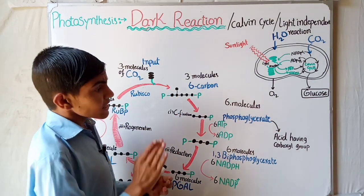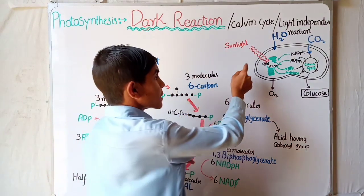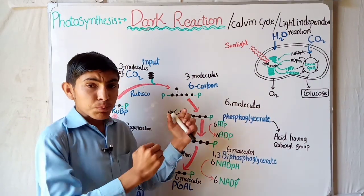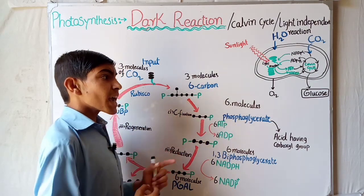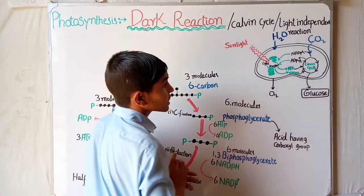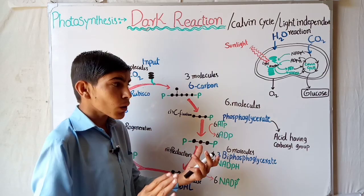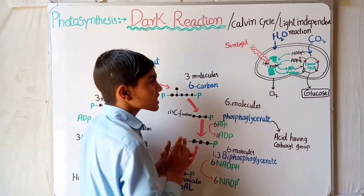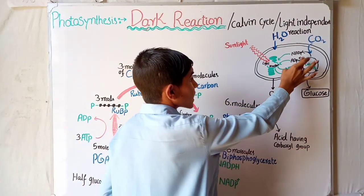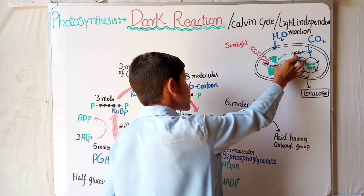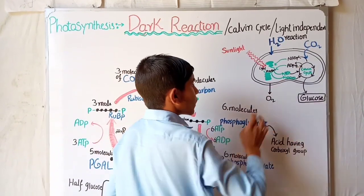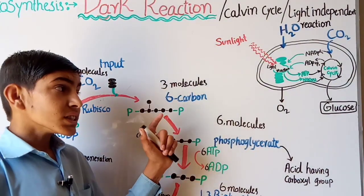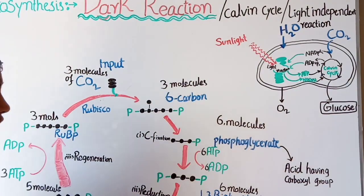Inside the chloroplast, two reactions take place. Firstly, the products of the light reaction — ATP and NADPH — are released into the stroma. ATP serves as the energy currency while NADPH is the reducing power. These enter into the Calvin cycle where they are oxidized, meaning their energy is released and used. The Calvin cycle releases ADP and NADP, which no longer carry much energy, and these are sent back to the thylakoid where the light reaction converts them again into ATP and NADPH.